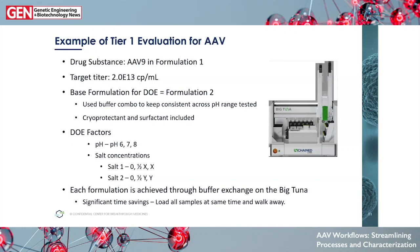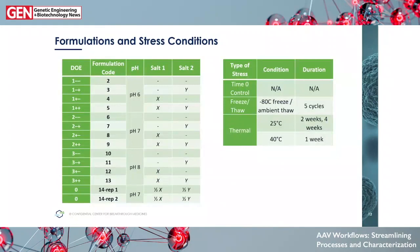For this tier one evaluation, we used an AAV9 that came to us in a formulation we didn't want to use for the study — this is where BigTuna comes into play. Our target titer was 2×10¹³. We used a base formulation for the DOE with a buffer combination that kept consistent composition throughout the pH range tested to isolate the pH effect. We included a cryoprotectant and surfactant because those are commonly needed but kept them consistent, focusing the DOE on pH (6, 7, and 8) and two different salts at high, low, and midpoint concentrations.